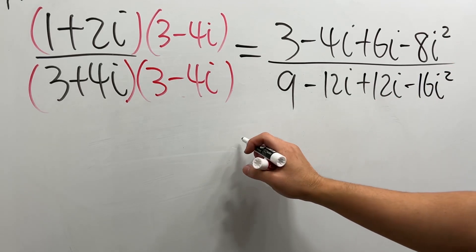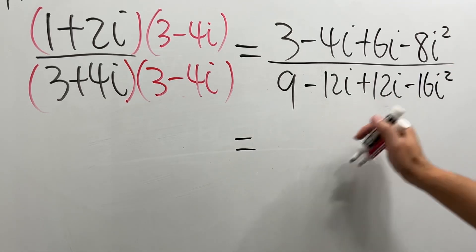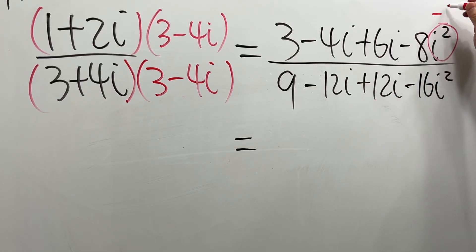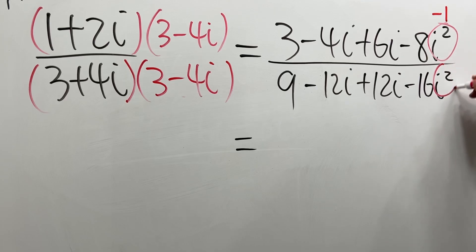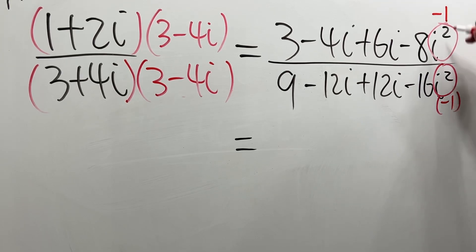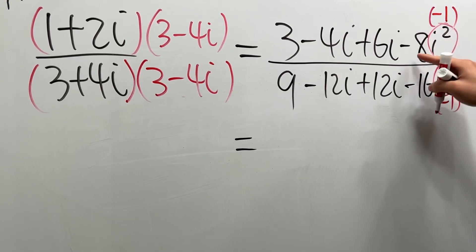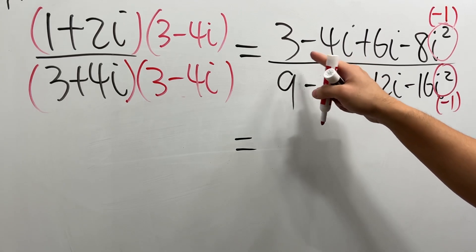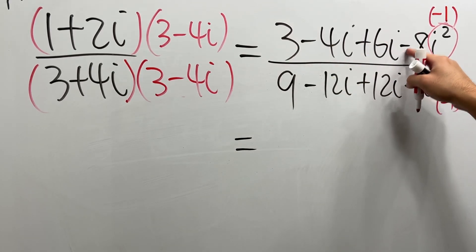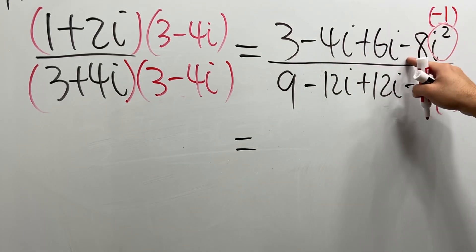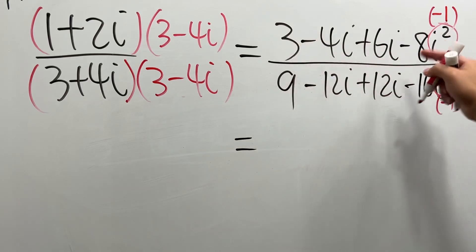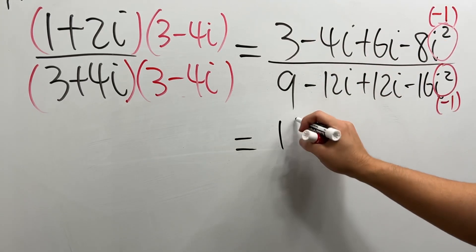Can we simplify? Yes. This i squared is the same as negative 1. Likewise, this right here is the same as negative 1. Make sure you multiply them. And let's see — 3 minus minus, so it becomes plus. 3 plus 8 is 11.